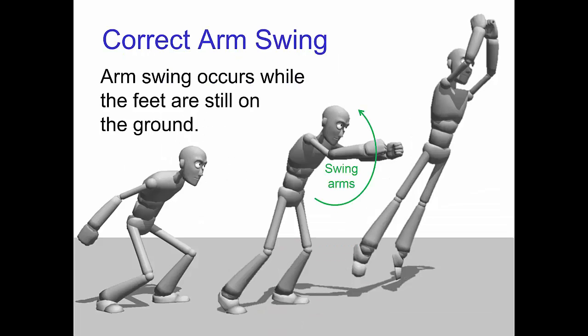The correct way to swing the arms when jumping is to swing them while the feet are still in contact with the ground.